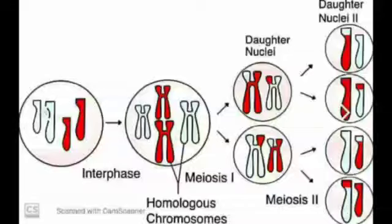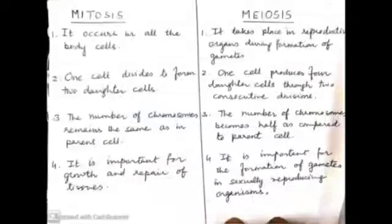Now based on whatever we have studied till now, let us now try to differentiate between mitosis and meiosis. Now mitosis takes place in all the body cells.